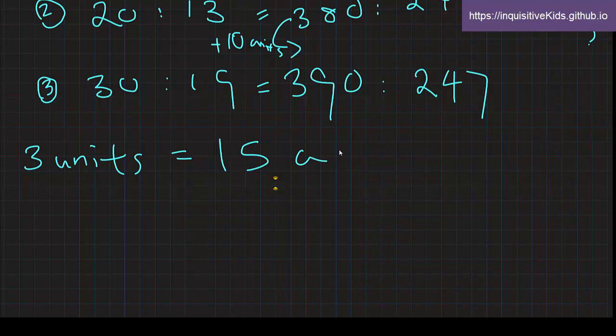That piece of information was especially given to tell us the correspondence between units and athletes. So if 3 units represents 15 athletes, then 1 unit represents 15 divided by 3 athletes, which is equal to 5 athletes.